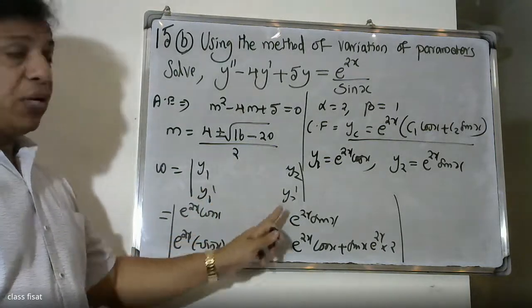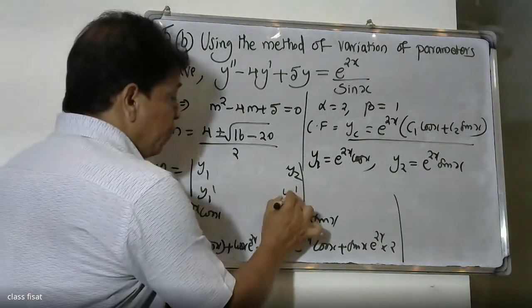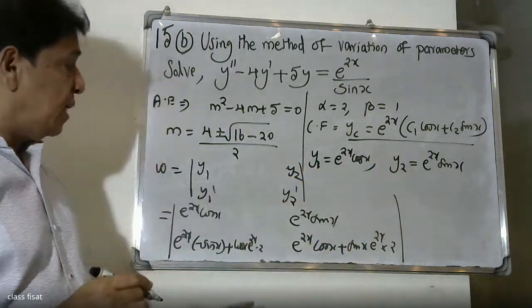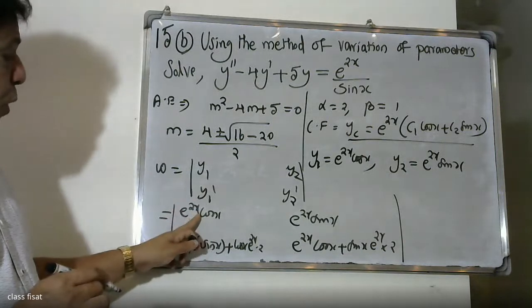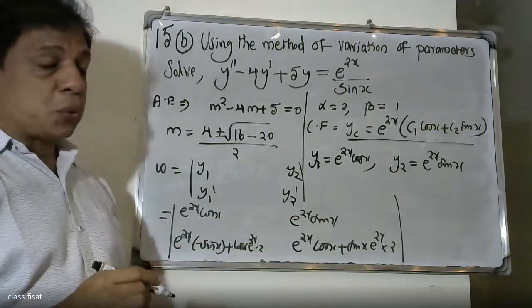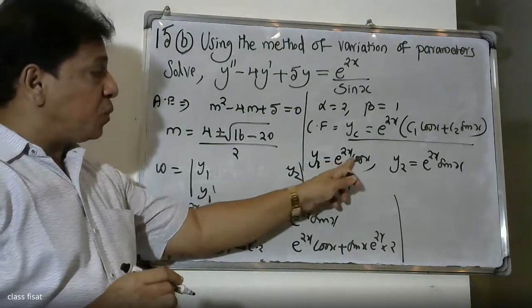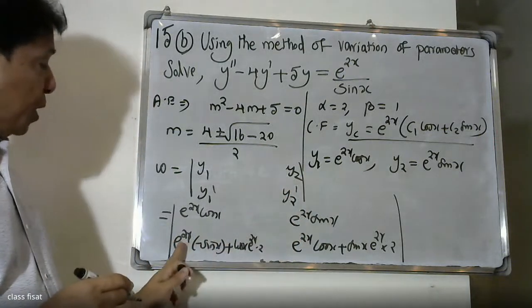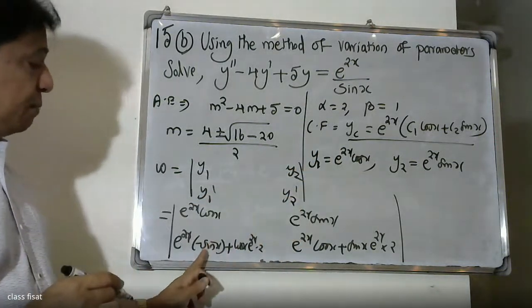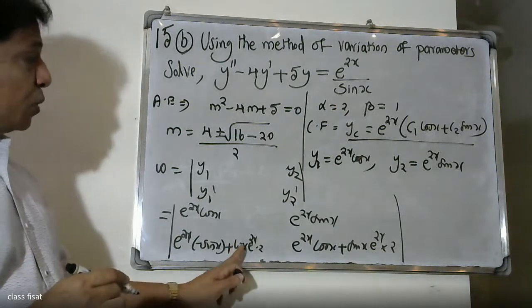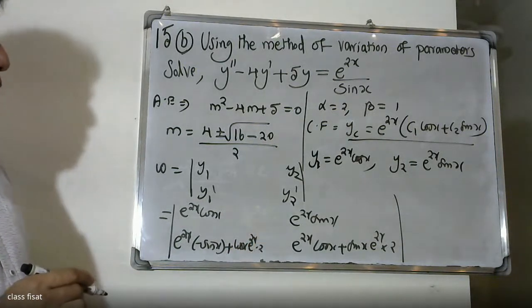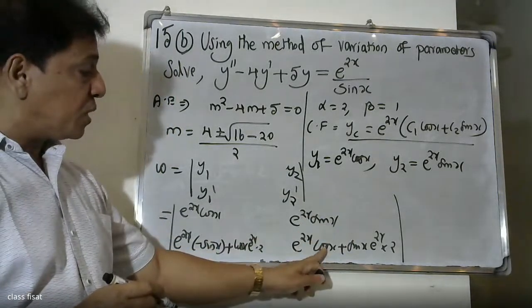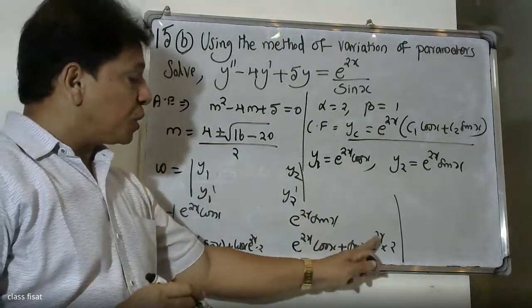So y1' = e^(2x)(2 cos x - sin x) and y2' = e^(2x)(sin x + cos x) + sin x · e^(2x) · 2, giving y2' = e^(2x)(2 sin x + cos x).